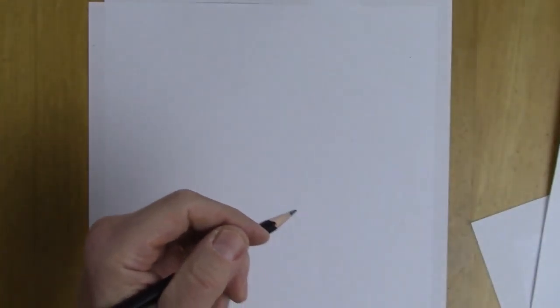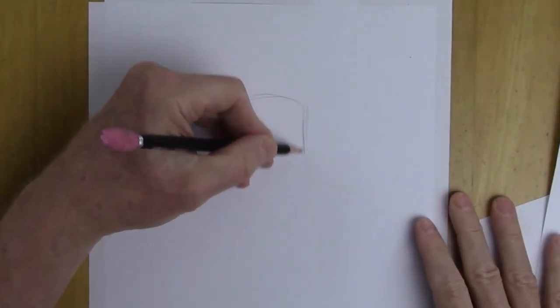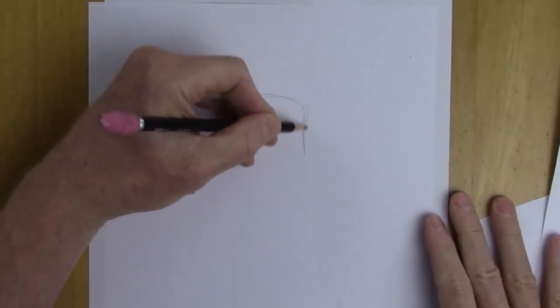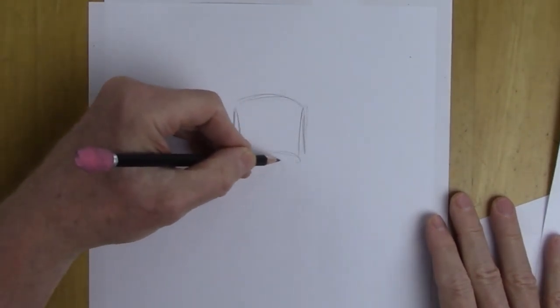A mini schnauzer is a lot of fun to draw. I had a dog that was a schnauzer, not a mini, but very similar. Let's start with some basic shapes. This book is about using templates to draw, and that means basic shapes. It's a lot easier if you start with a basic shape than just trying to wing it.